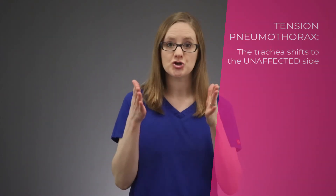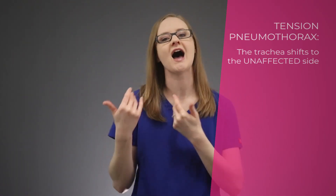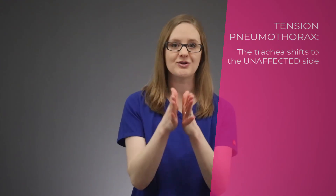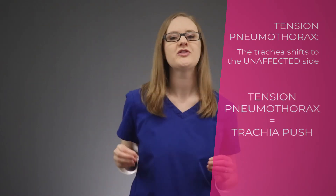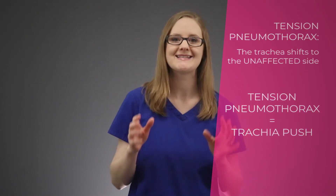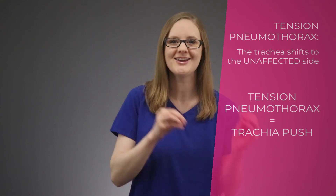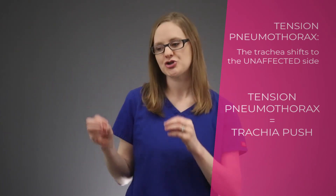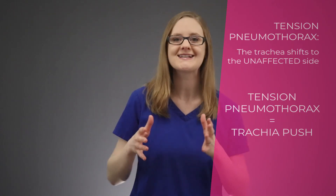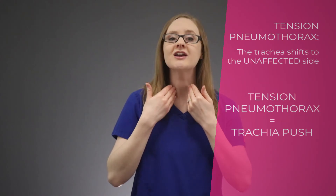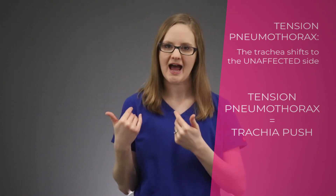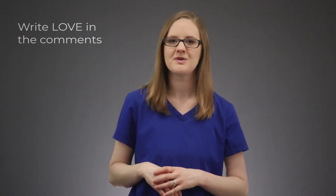One thing nursing instructors love to test you on is that during a tension pneumothorax, it can cause the trachea to shift to the unaffected side. Here's a really easy way to remember this: when you think tension pneumothorax, think trachea push — TP and TP. Tension pneumothorax, trachea push. So during a tension pneumothorax, the trachea is going to be pushed to the unaffected side. If this memory trick helped you, write 'love' in the comments below.